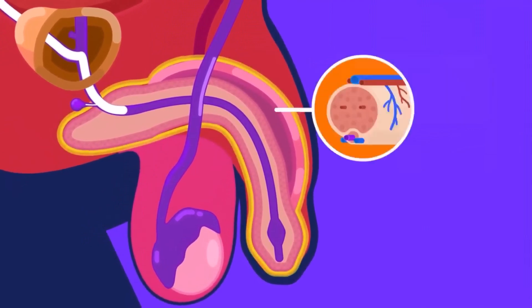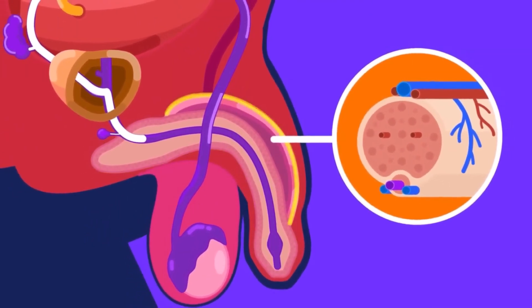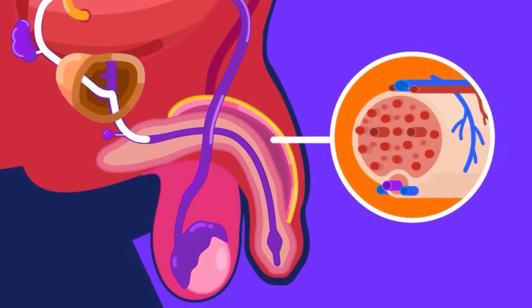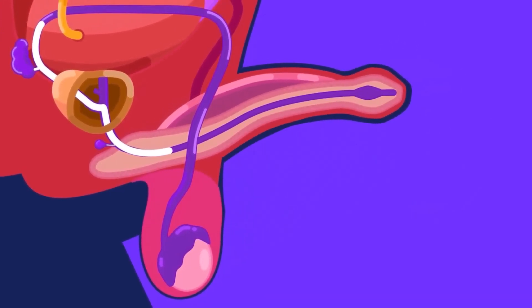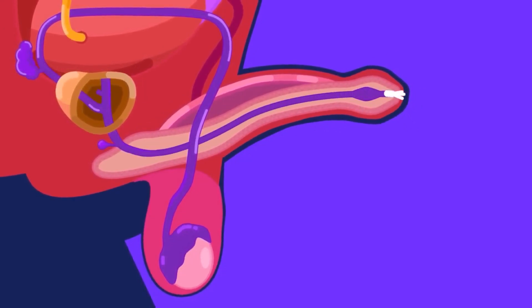The penis is an organ that contains erectile tissue with numerous blood spaces. When stimulated, the blood will fill the spaces and the penis will become erect and hard. Given enough stimulation, ejaculation or the release of the semen can happen.